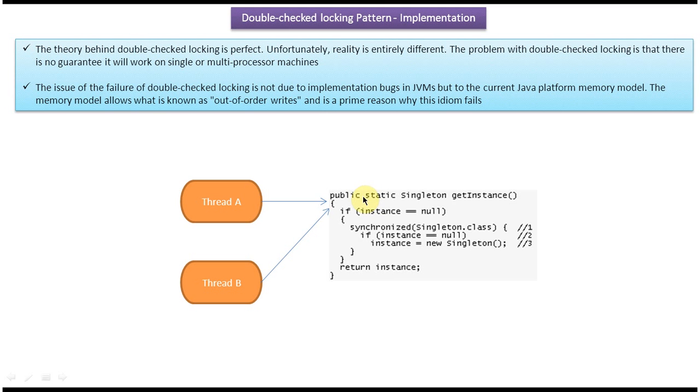We are putting the lock only whenever it is needed, by moving the synchronized block from the method level to inside the method — wrapping only the critical section. This avoids locking on every call to getInstance.